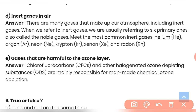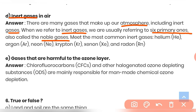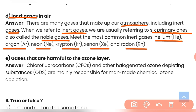Question (d): Name the inert gases in air. There are many gases that make up the atmosphere, including inert gases. When we refer to inert gases we usually refer to the six primary ones, also called noble gases: helium, argon, neon, krypton, xenon, and radon. These are the most common inert or noble gases present in the air.